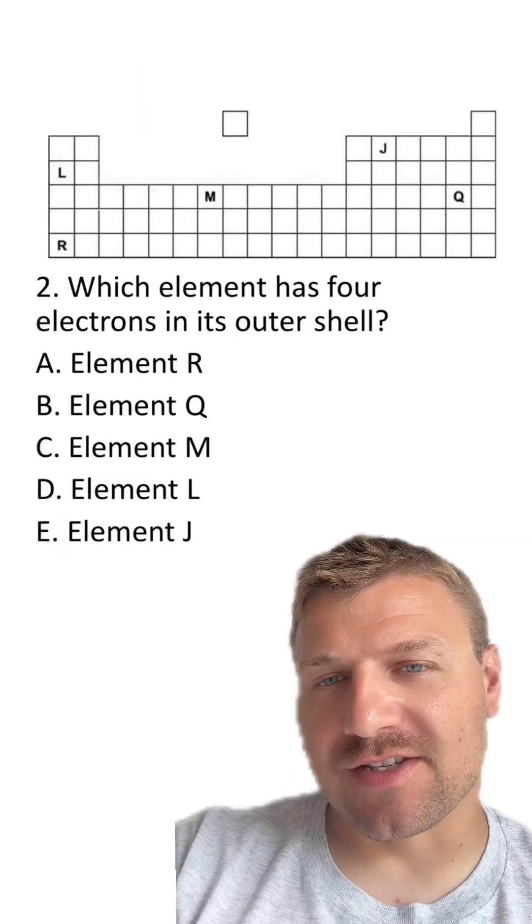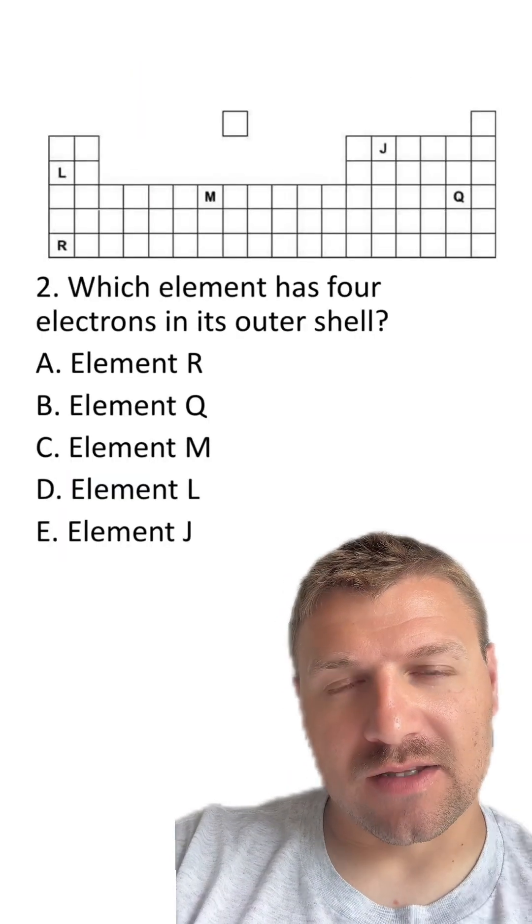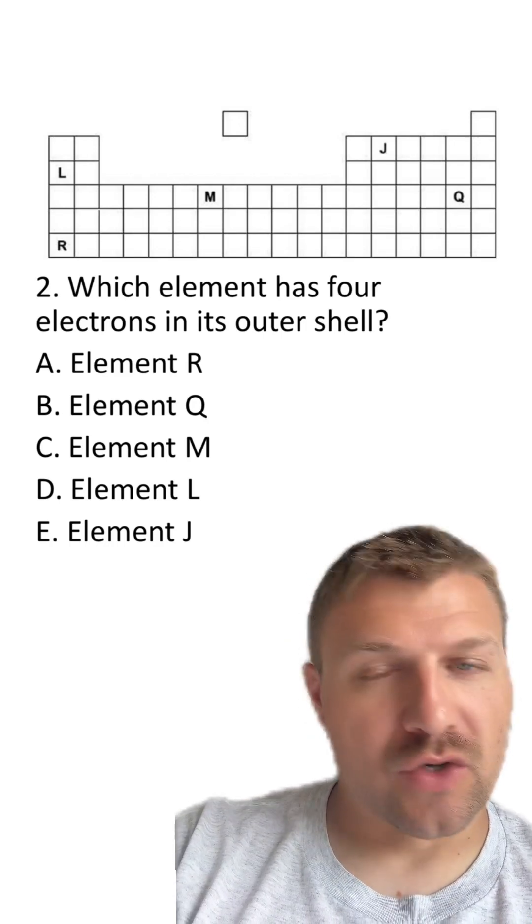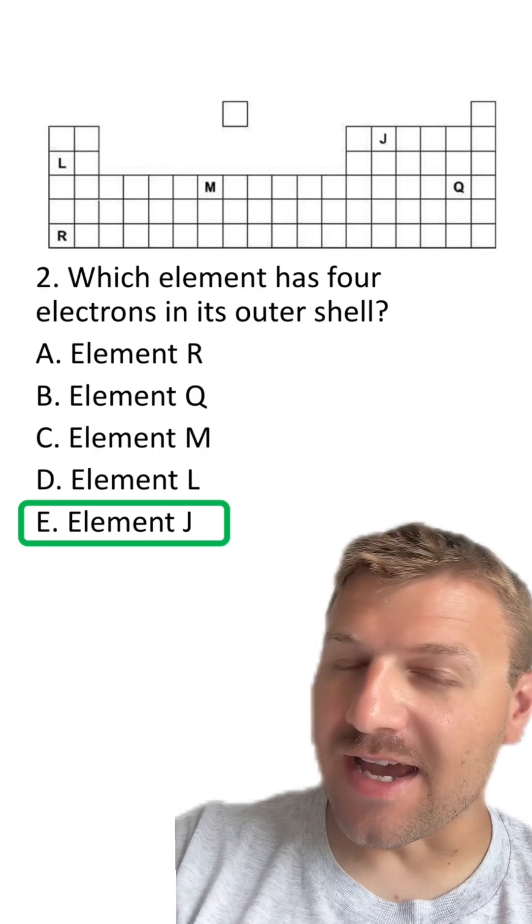Next question: which element has four electrons in its outer shell? There are five choices: elements L, M, J, Q, and R. The answer here is element J.